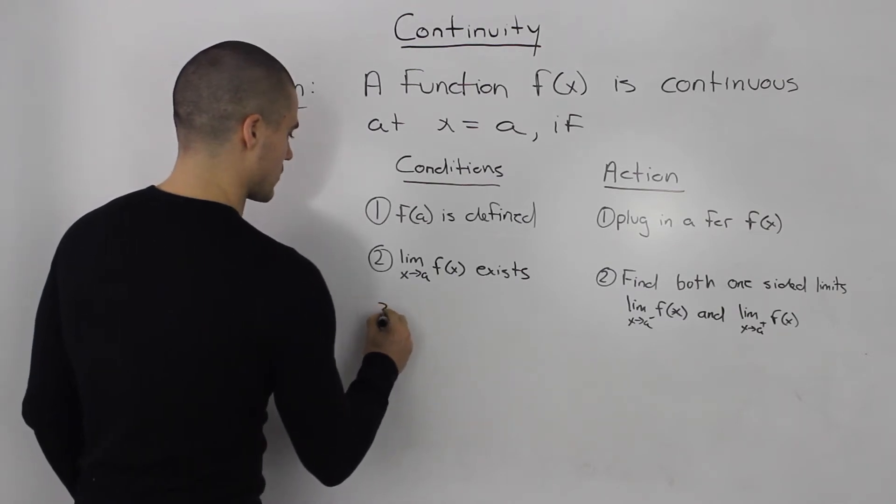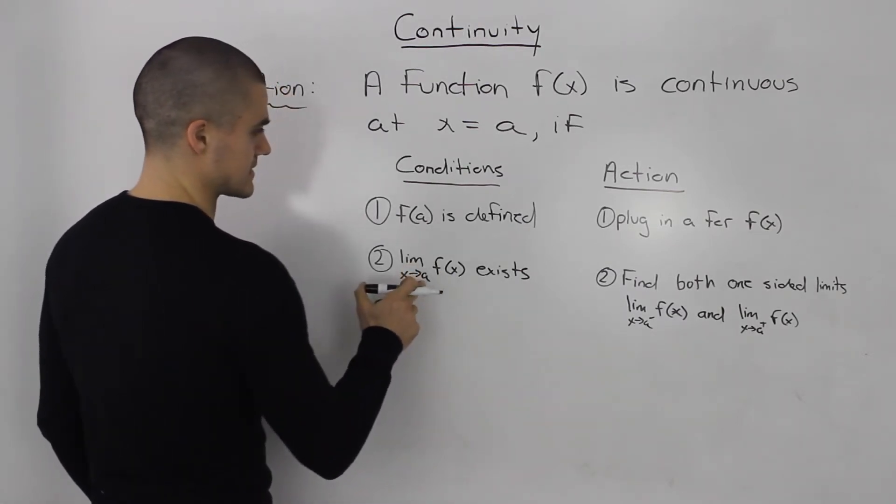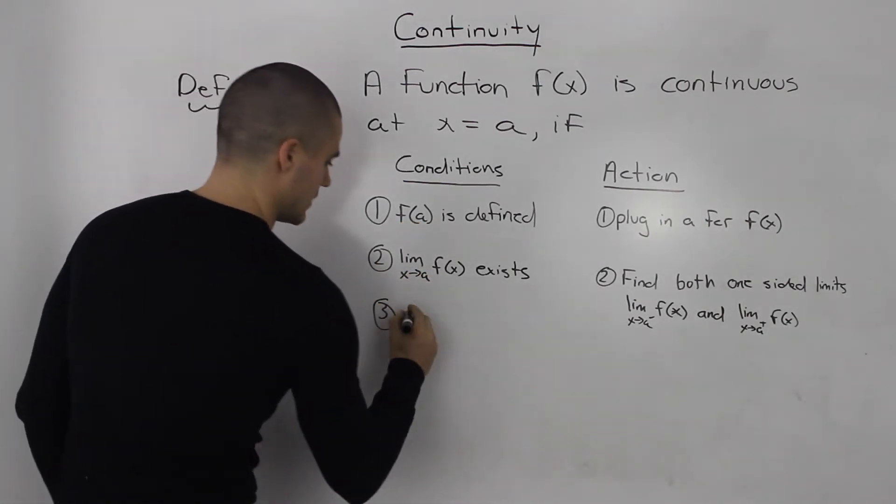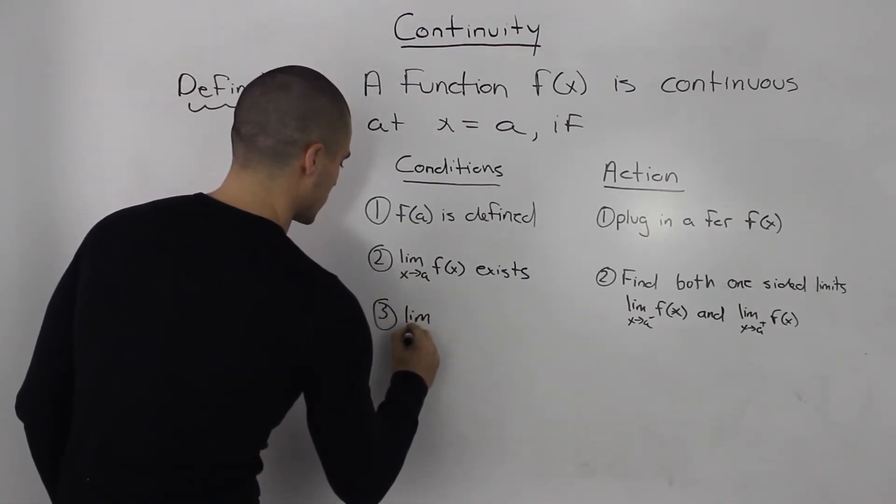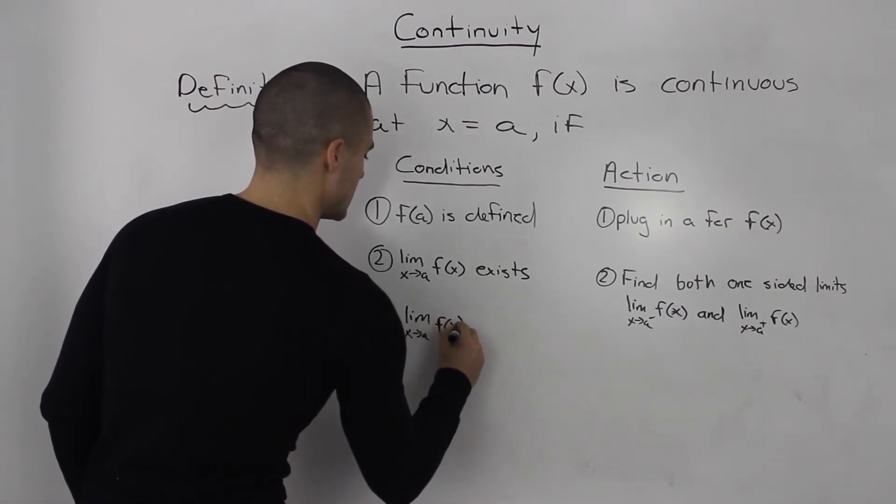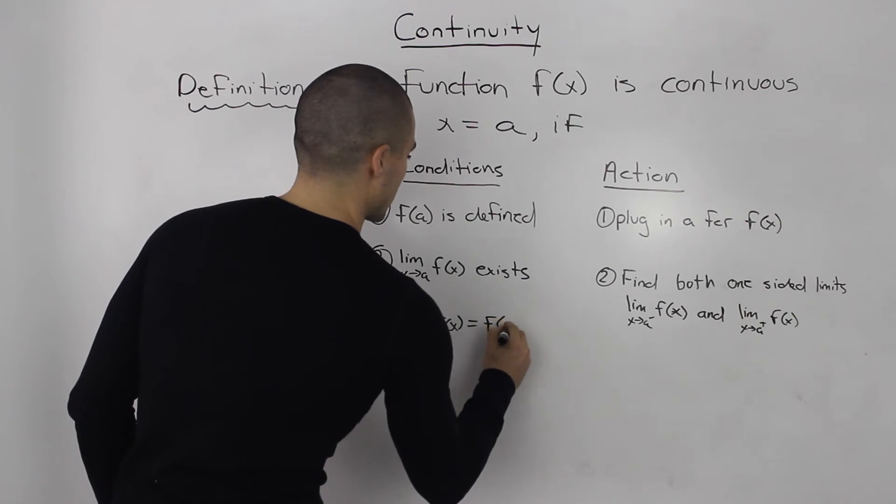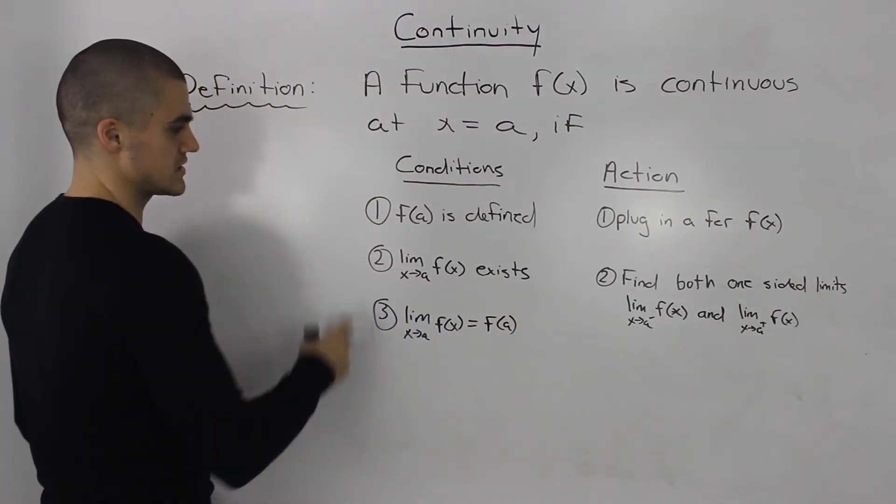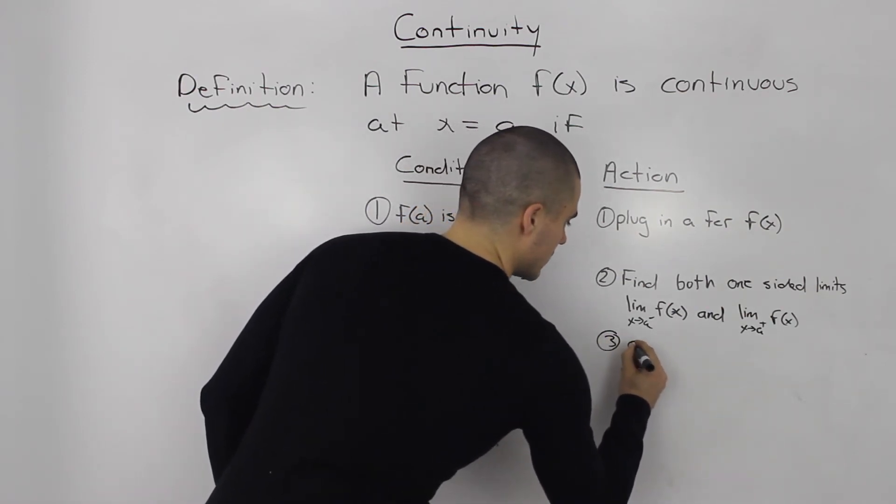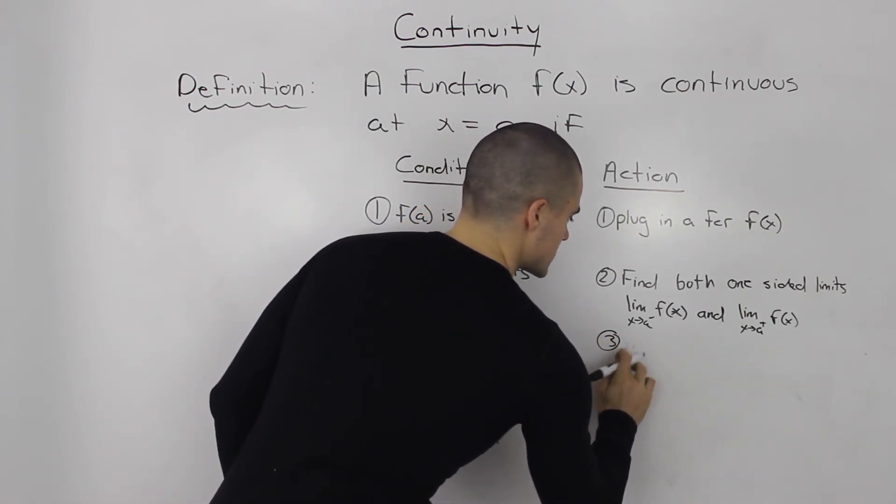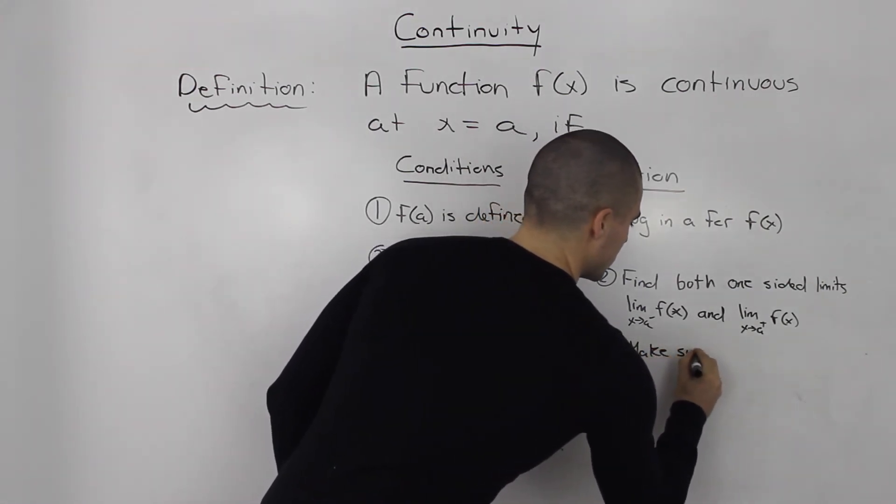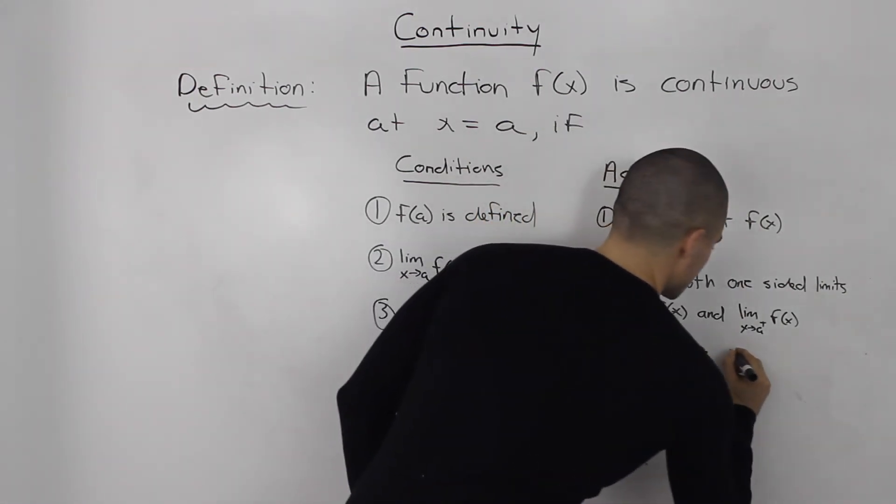The third step is that once you get f(a) and once you get this limit, they both have to equal. The limit as x approaches a of f(x) has to equal f(a). That's just making sure conditions one and two are equal.